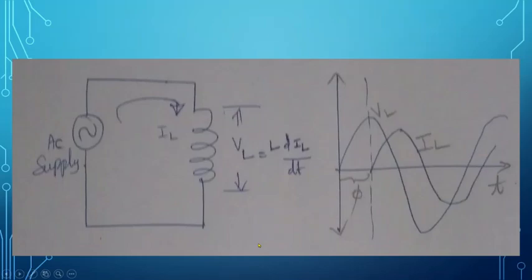Now we apply AC supply to the inductor. When AC supply is applied, the inductive current IL flows through the inductor and there is a voltage drop across it — the inductance voltage VL. That inductance voltage is always equal to the inductance L multiplied by dIL/dt.